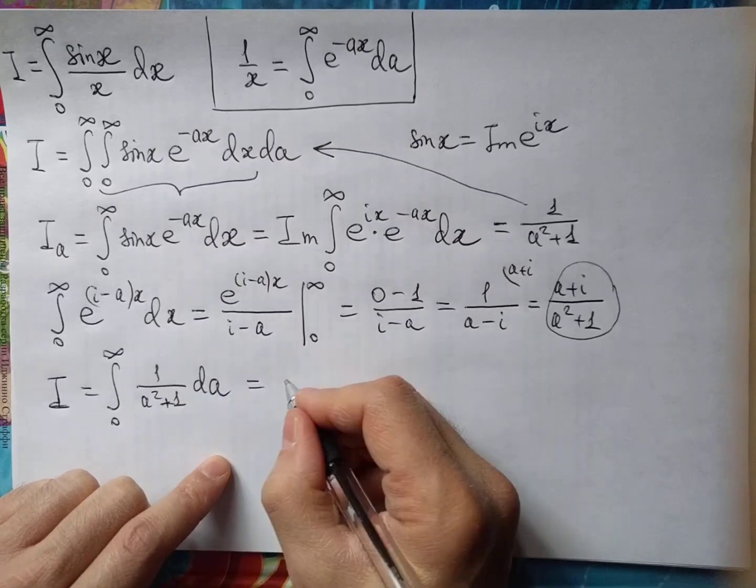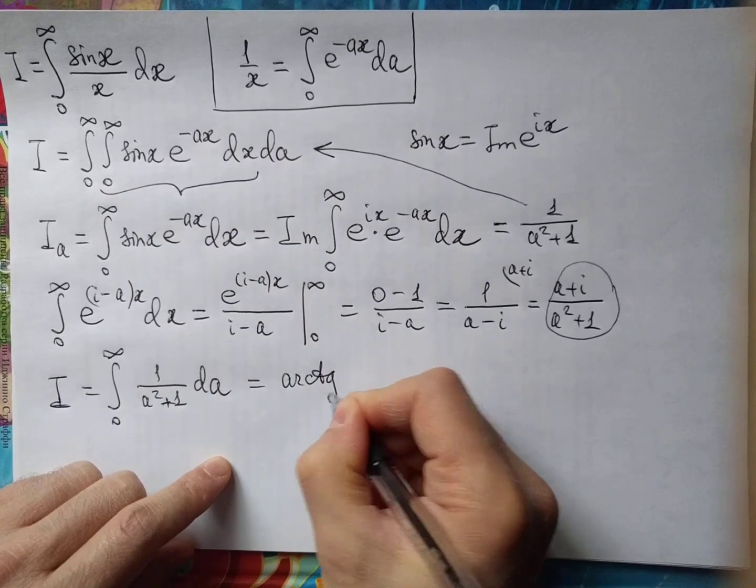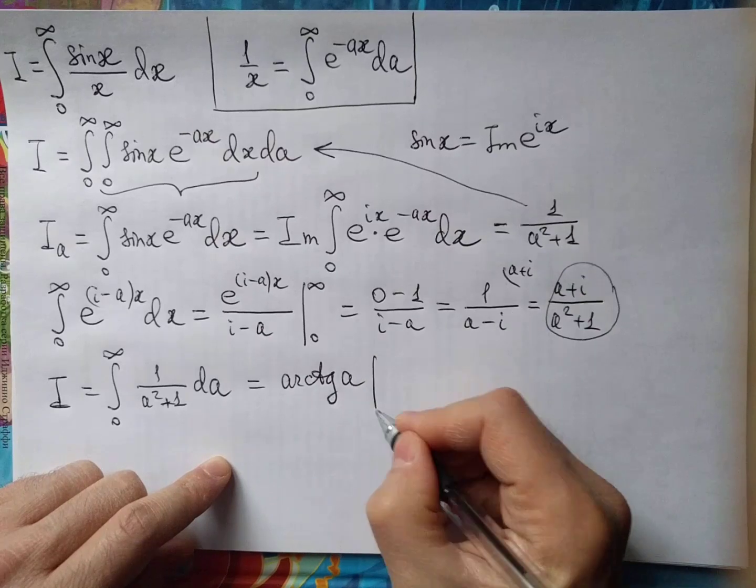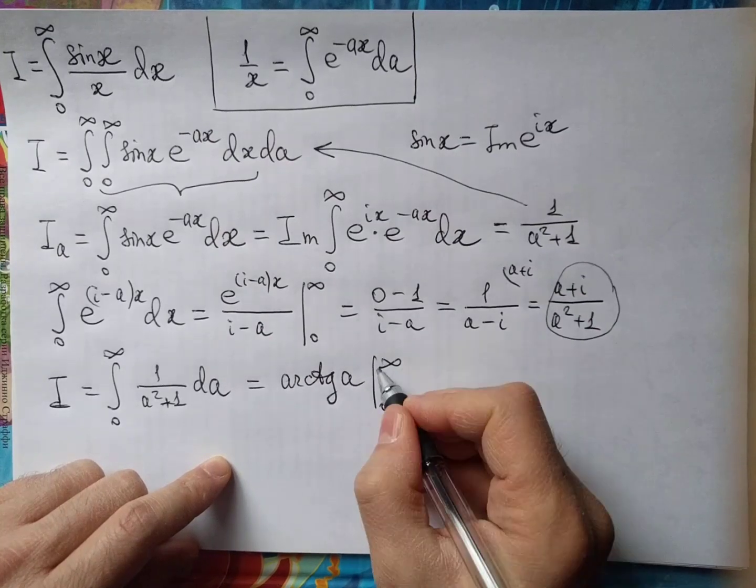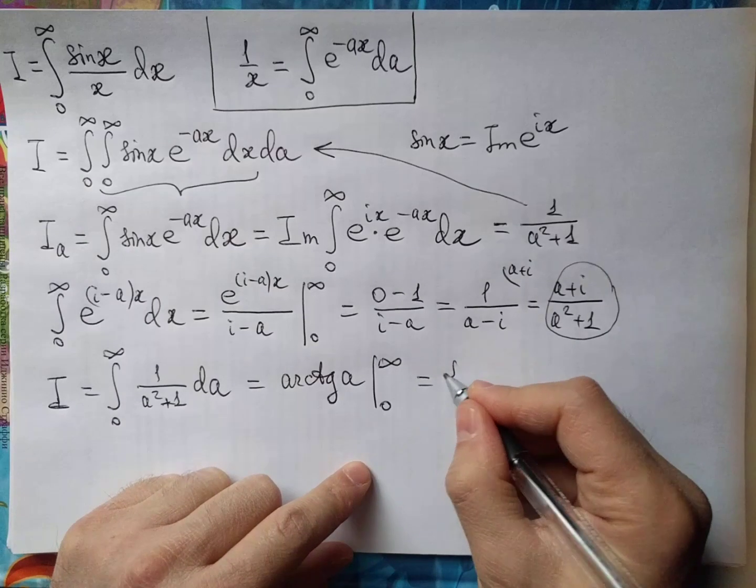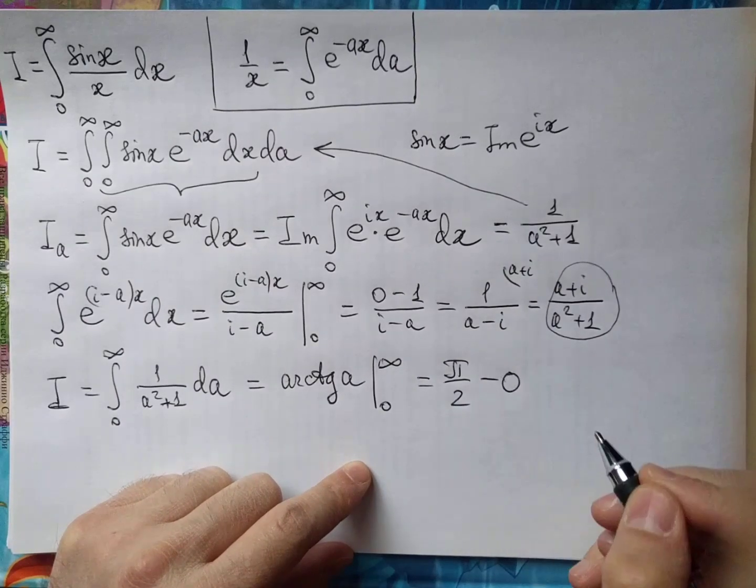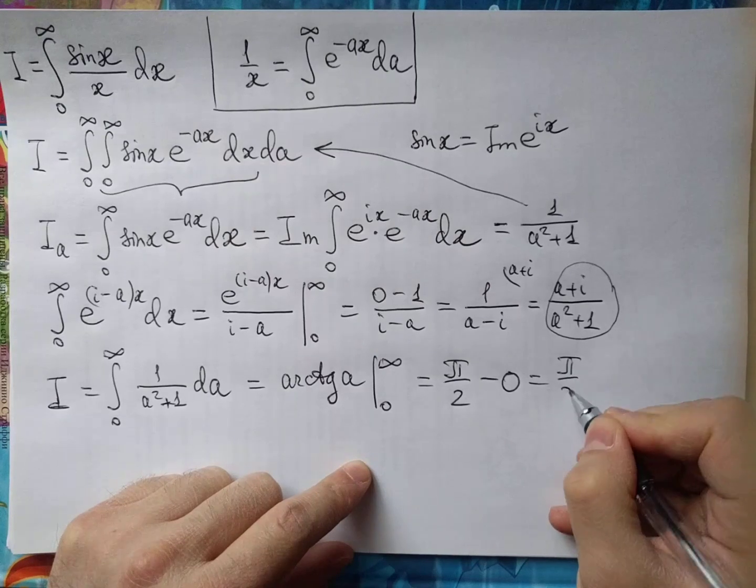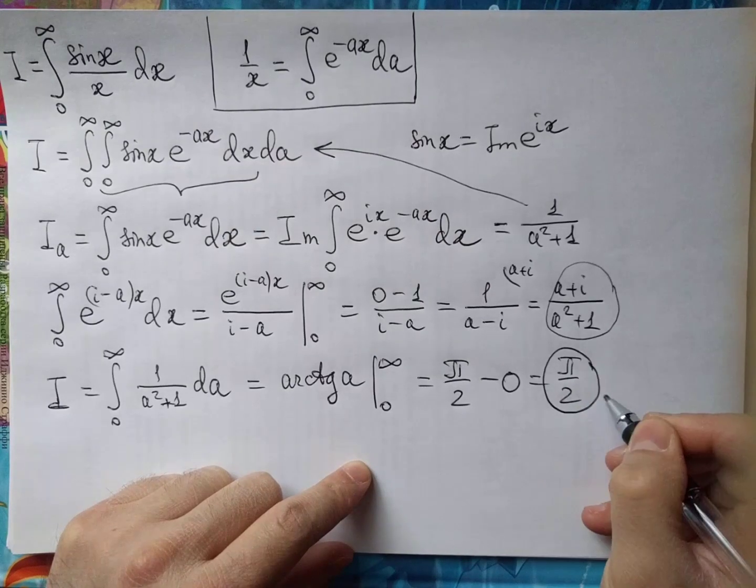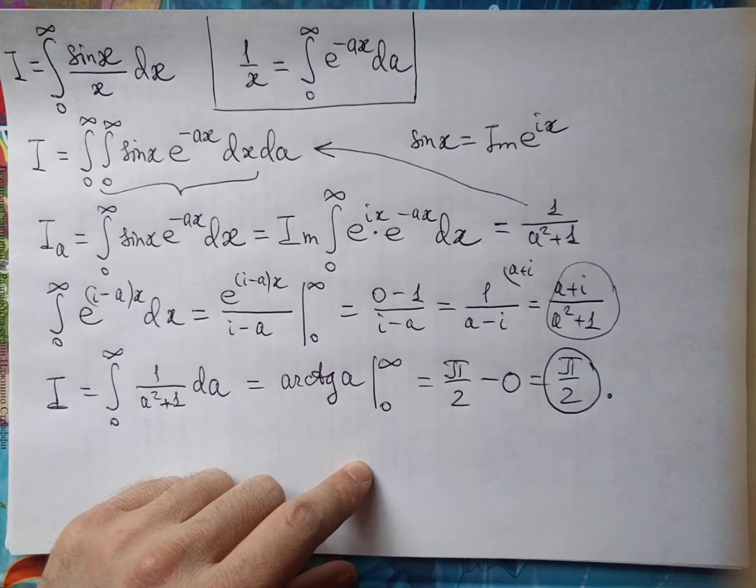This is the well-known inverse tangent of a from 0 to infinity. In the upper limit we have pi over 2, and in the lower limit we have 0. And so finally there is pi over 2.